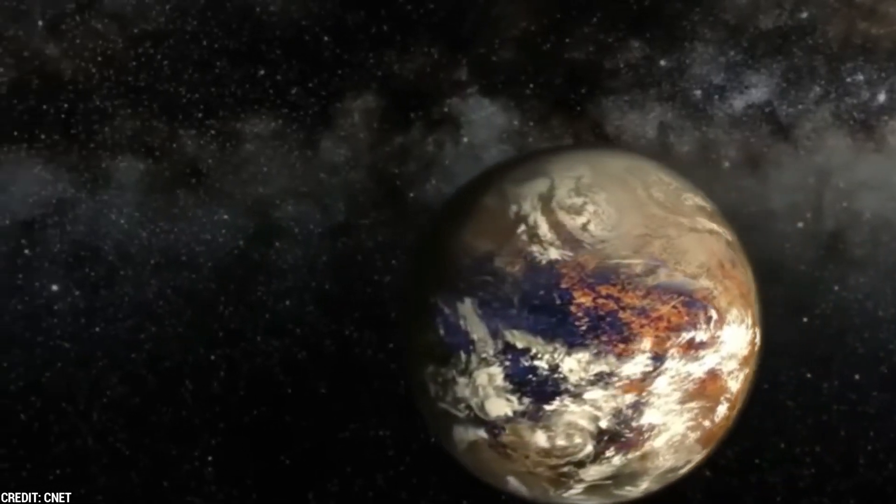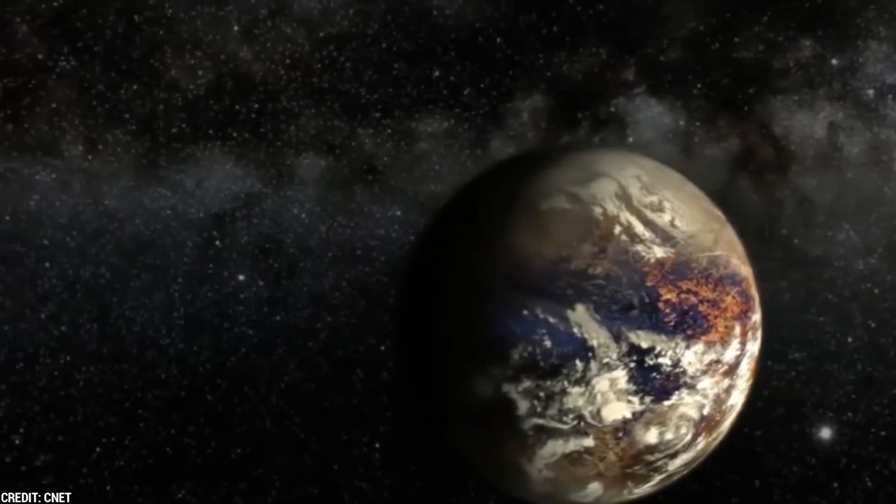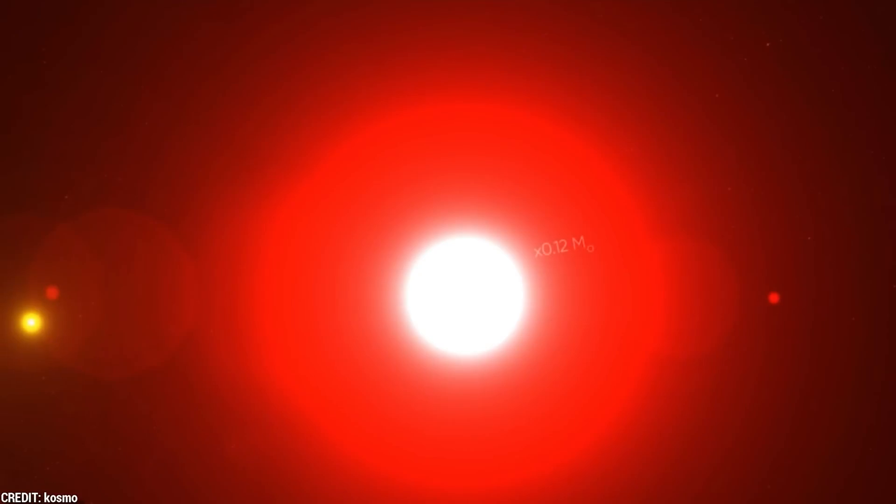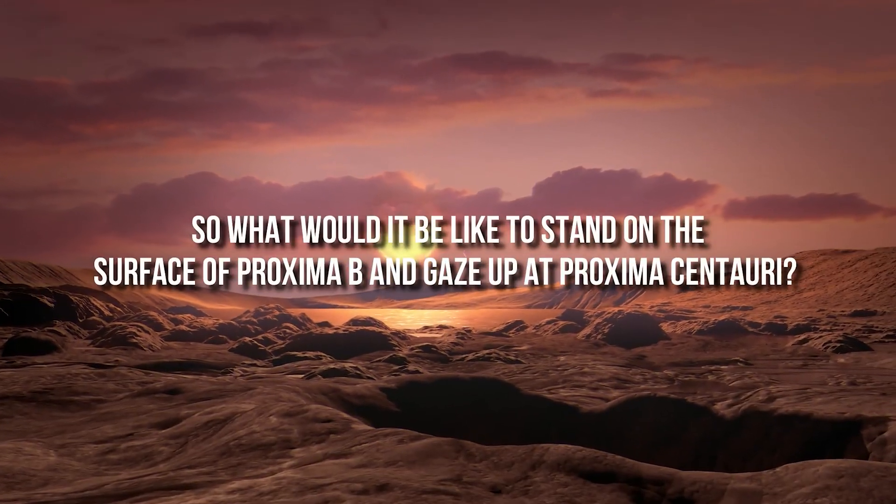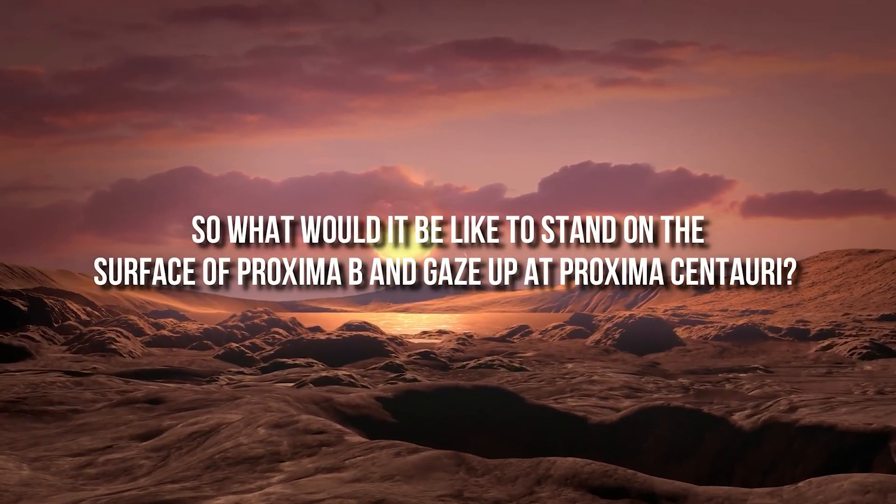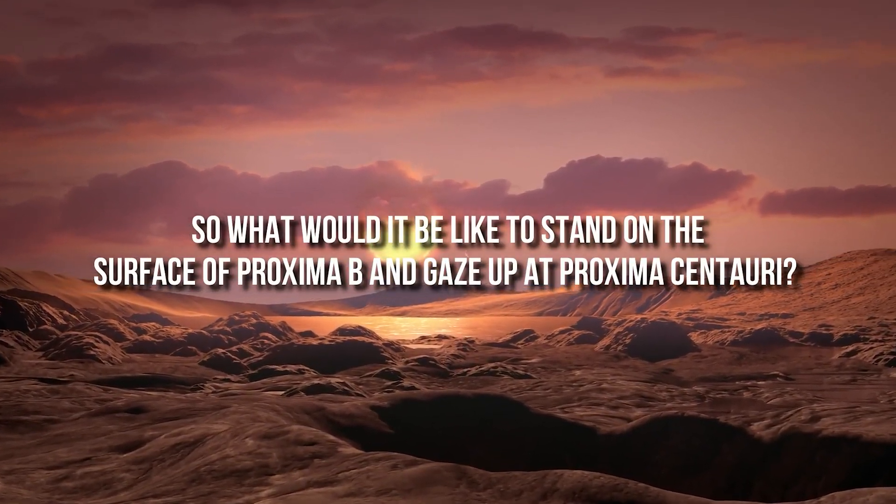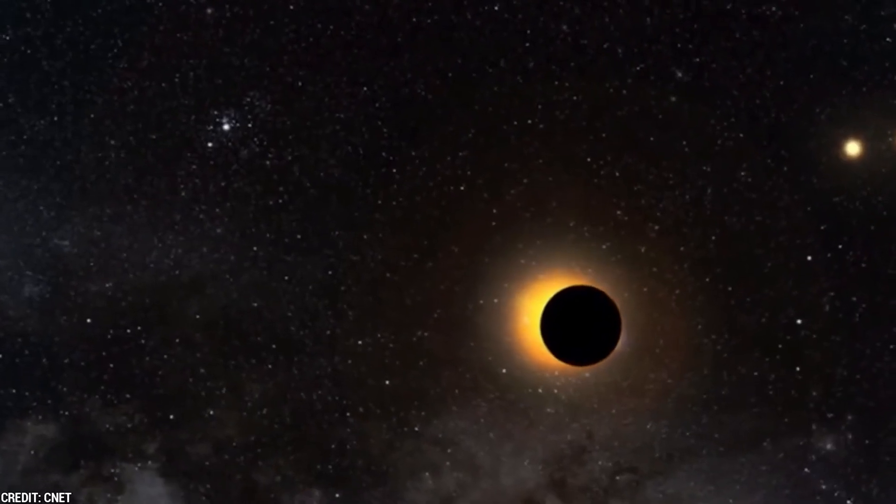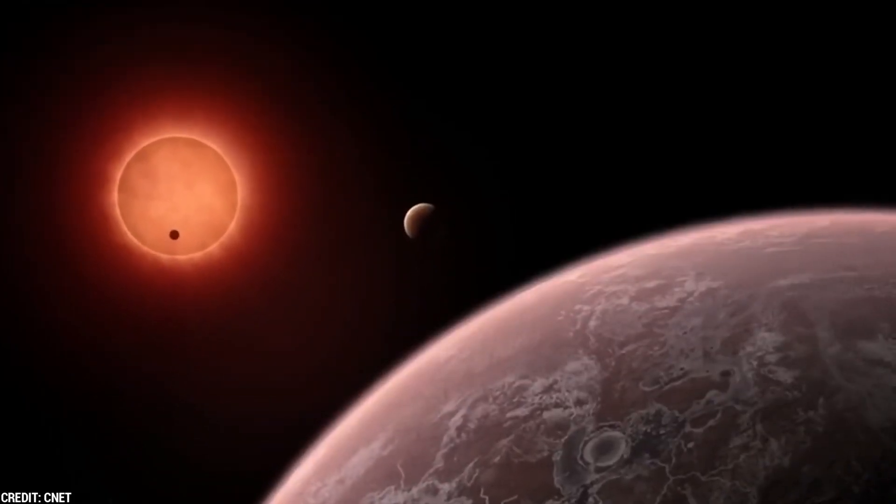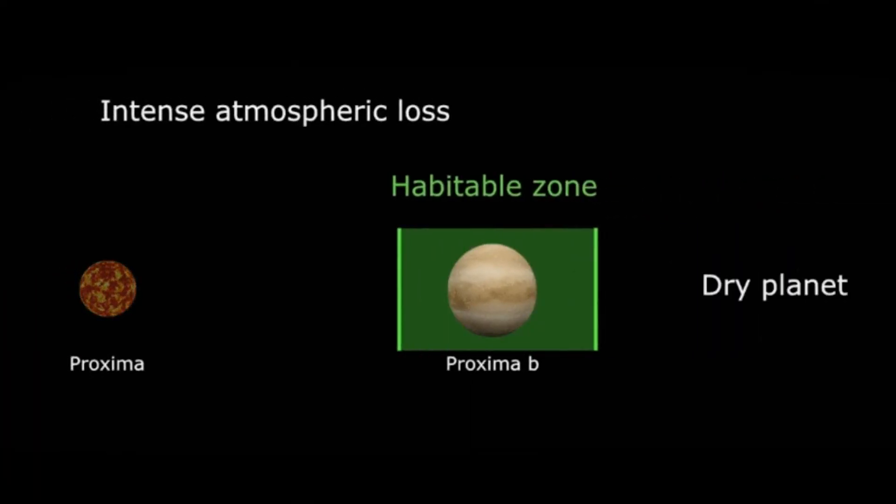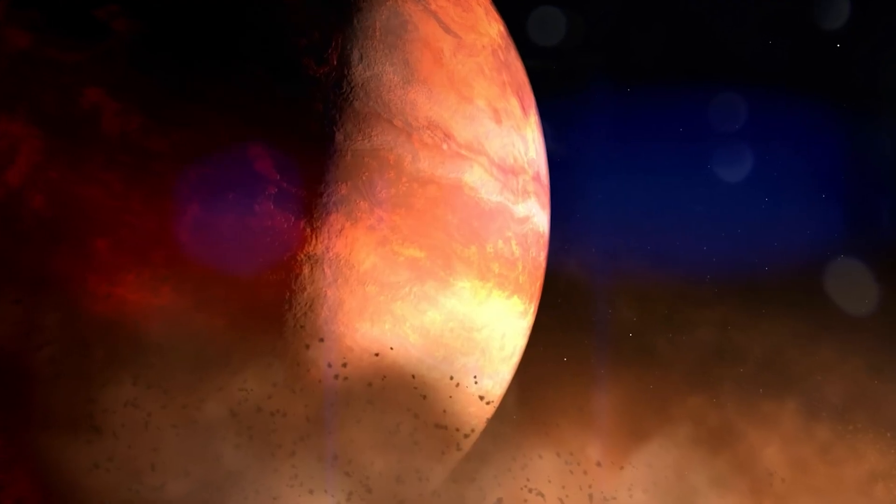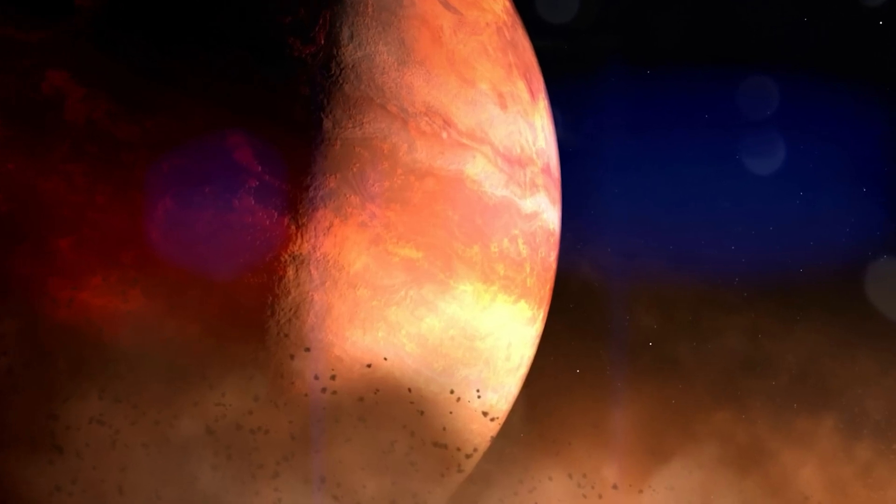You might be thinking that a planet that's so close to its star must be boiling hot. But Proxima Centauri is a tiny red dwarf star that doesn't radiate nearly as much energy as our Sun. So what would it be like to stand on the surface of Proxima B and gaze up at Proxima Centauri? The star would look like a dull red orb roughly three times as big as our Sun. And if the planet is in its star's habitable zone, which it appears to be, it might have the right conditions to support liquid water.